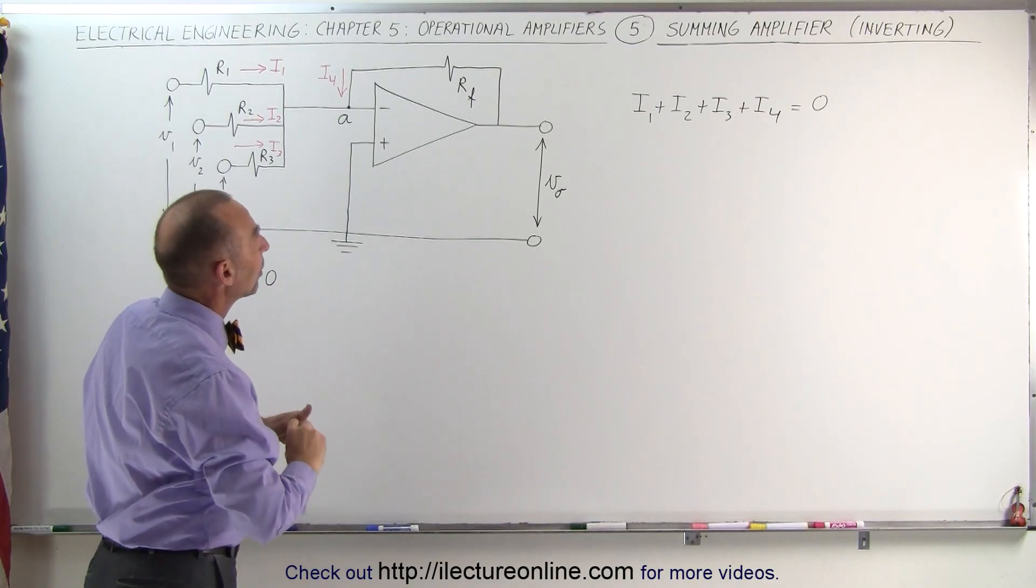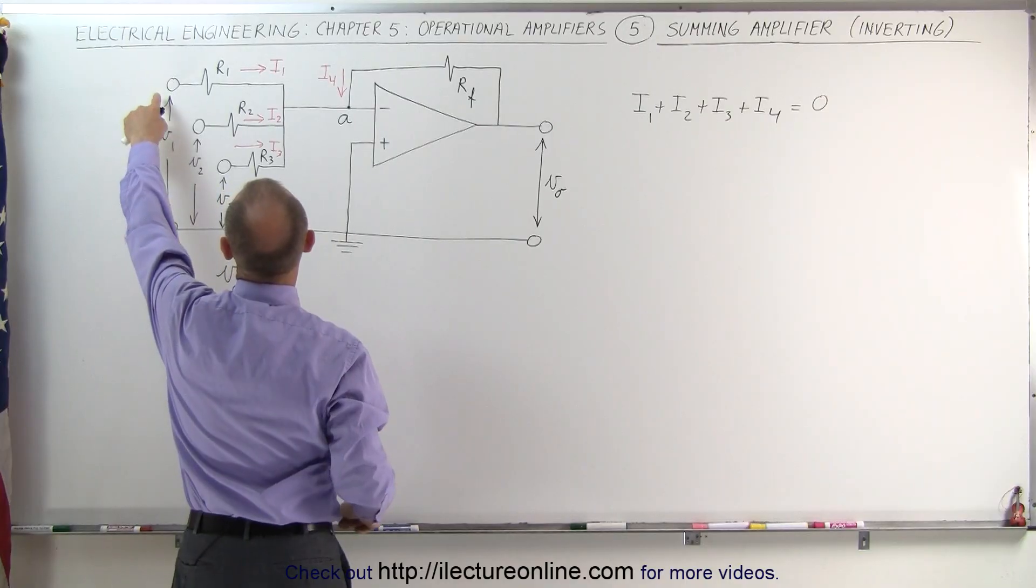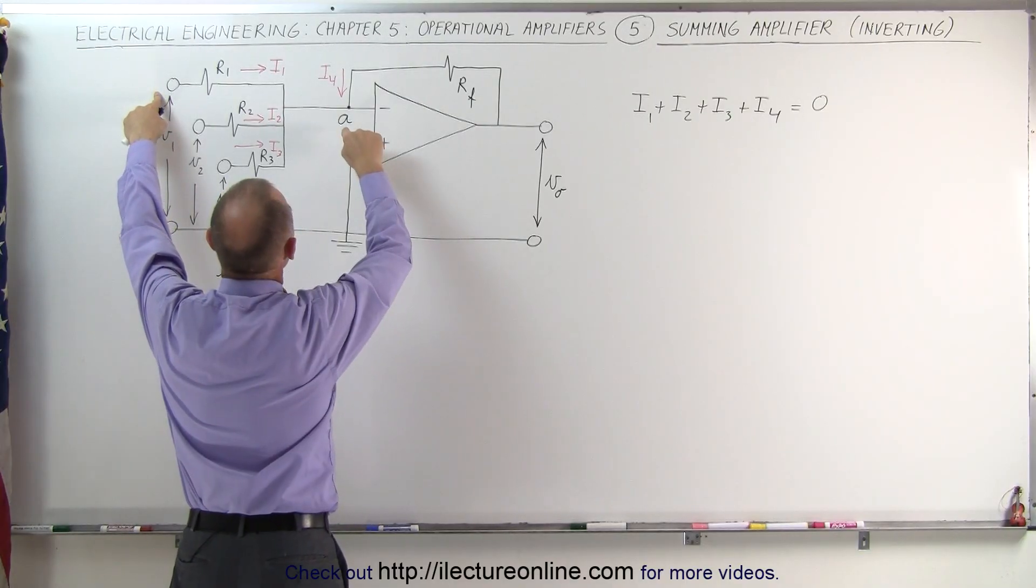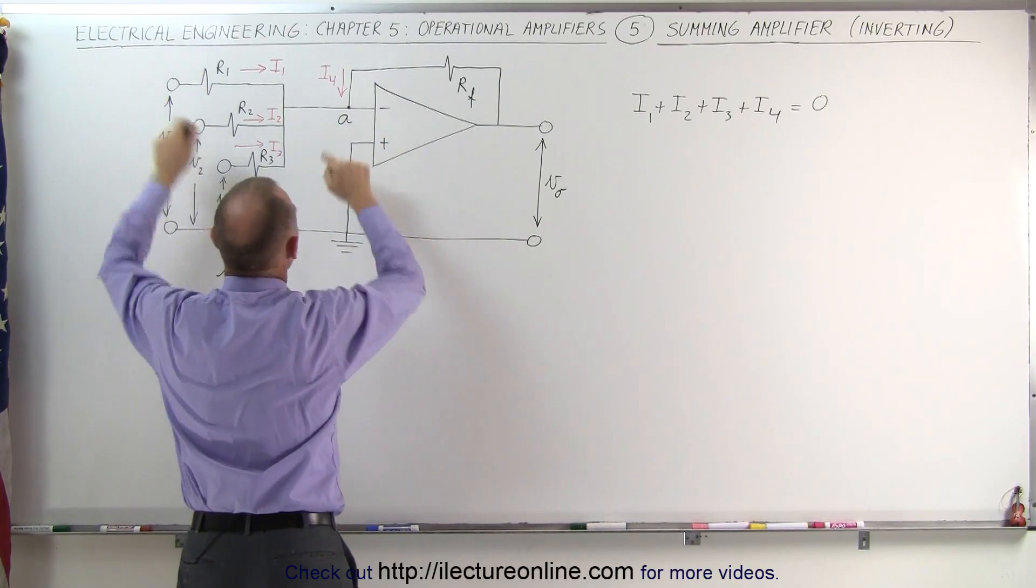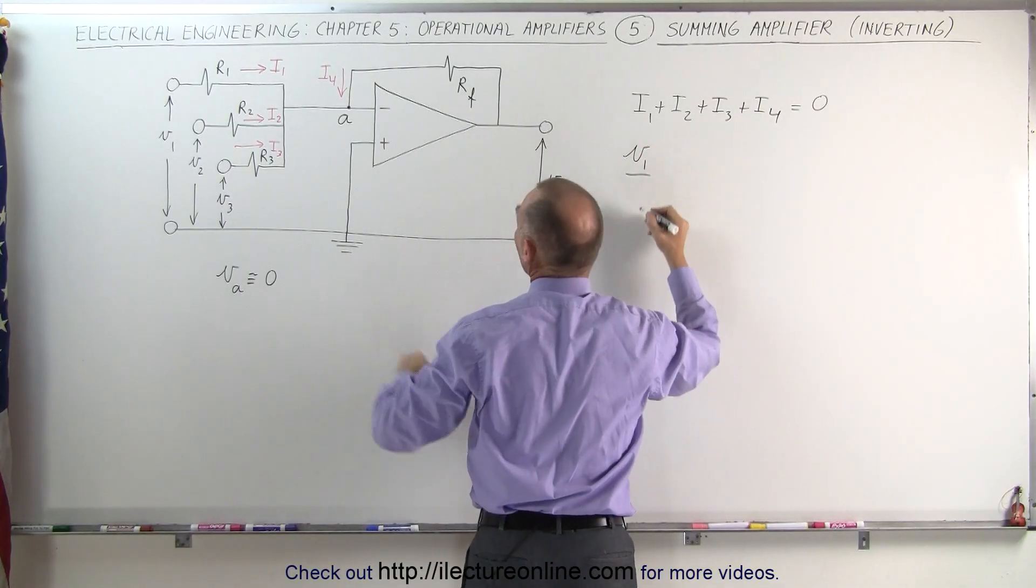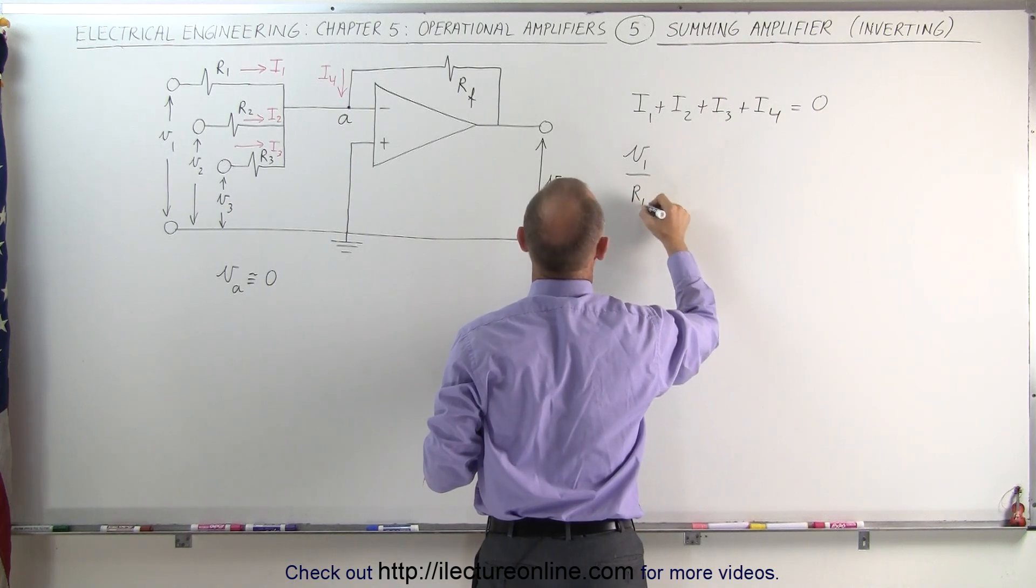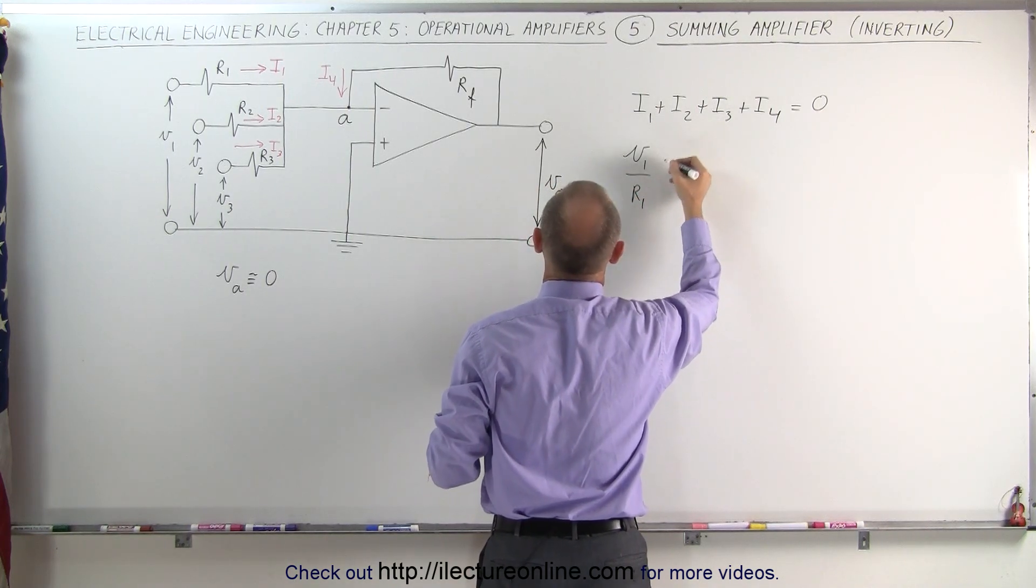Now let's go ahead and plug in what we have here. Current I1 will be equal to the voltage input minus the voltage at A, which is equal to zero. In other words, this will be equal to V1 divided by the resistance across which the current has to go, which is R sub 1.